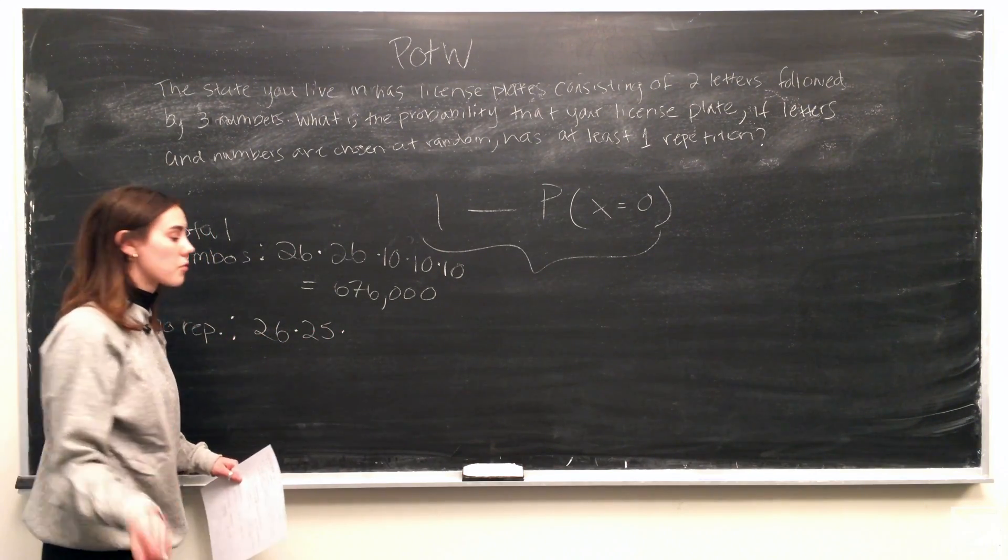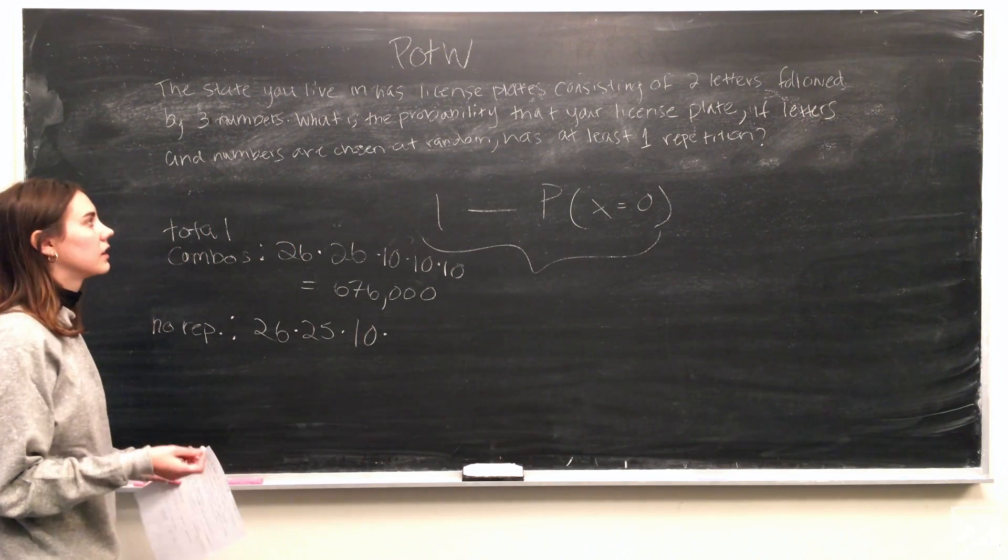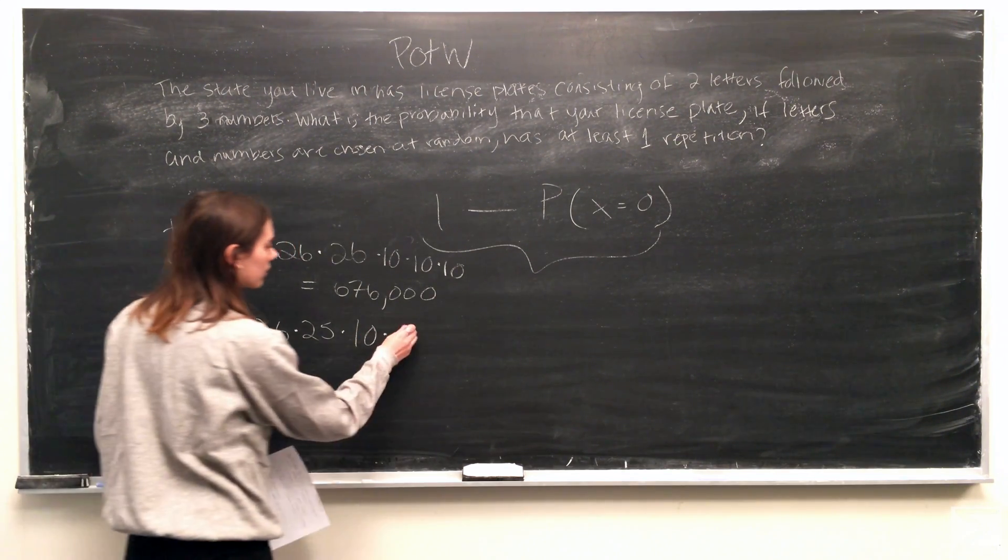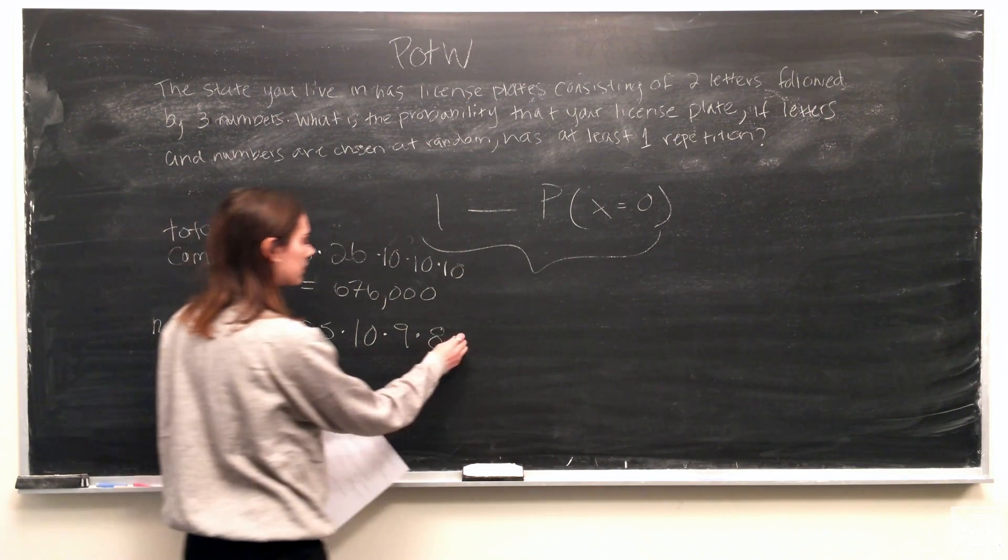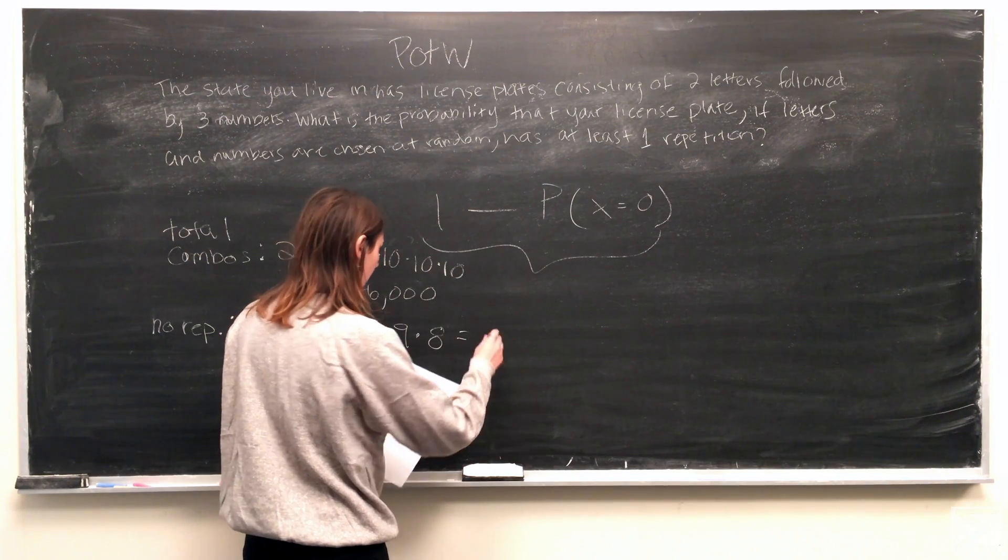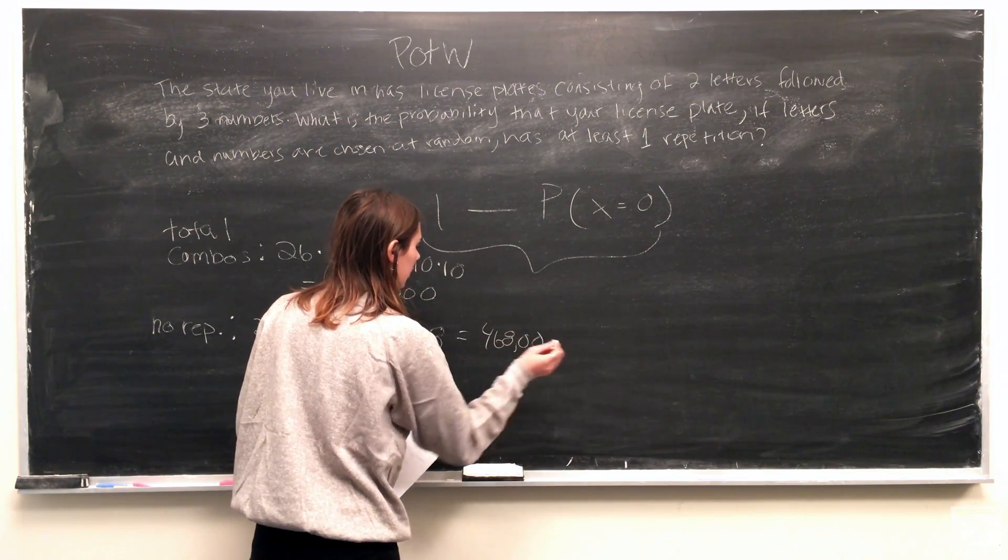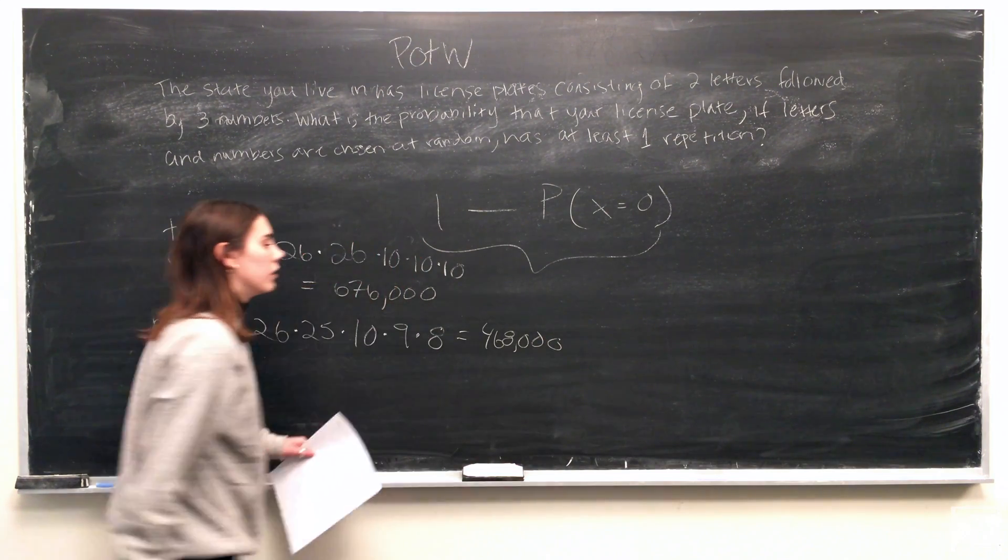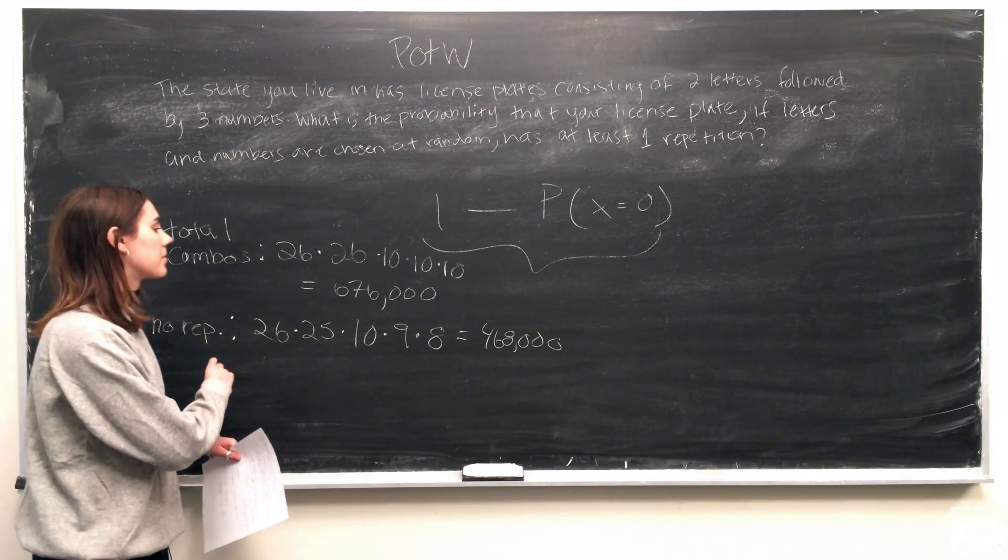For the first number, there would be 10 from the digits 0 through 9. For the second number, there would then be 9, and then 8 for the third. So this gives us a total number of 468,000 possible combinations for license plates that have no repetitions.